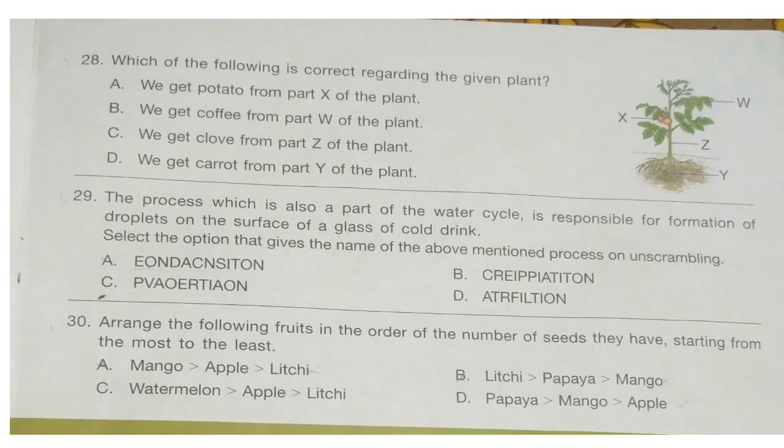Question 28. Which of the following is correct regarding the given plant? A. We get potato from part X of the plant. B. We get coffee from part W of the plant. C. We get clove from part Z of the plant. D. We get carrot from part Y of the plant.